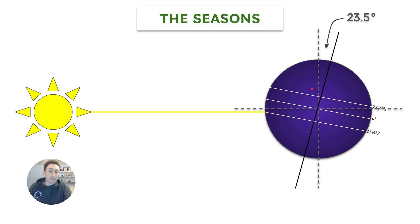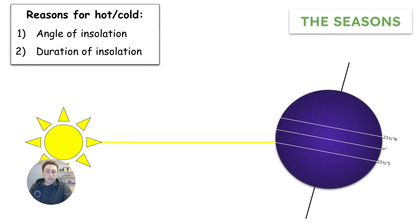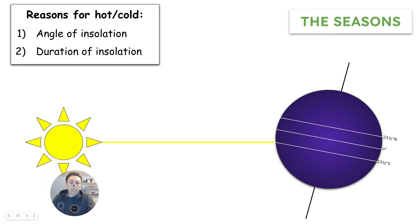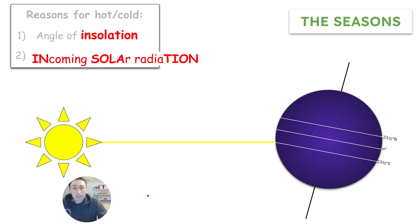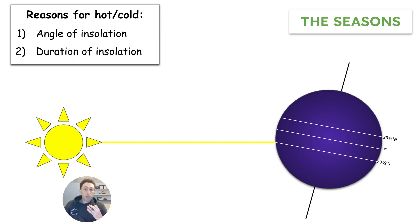Sometimes it'll be hot in the Southern Hemisphere and sometimes it'll be hot in the Northern Hemisphere. There are two main reasons why a place is hot or cold on Earth. One reason is the angle of insolation, which means how direct the sun's rays are. Insolation means incoming solar radiation — radiation from the sun.